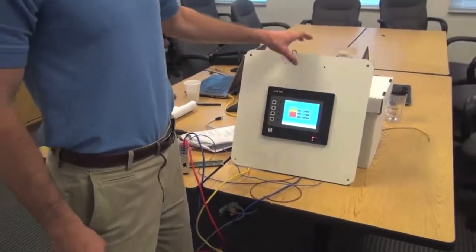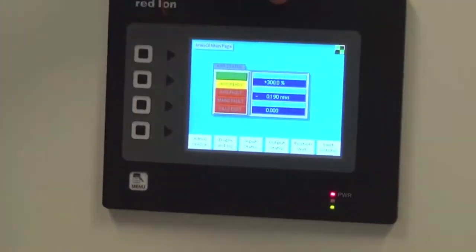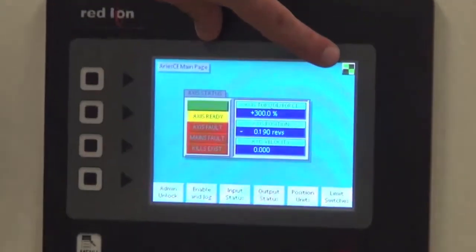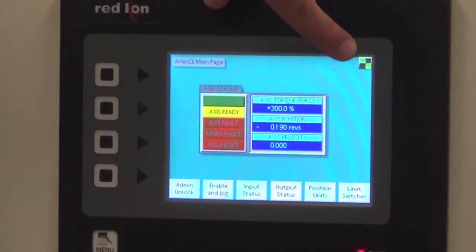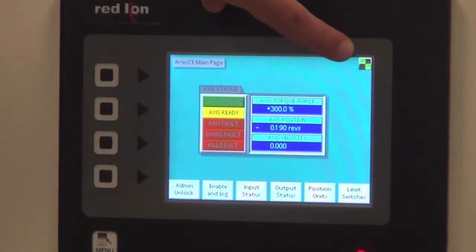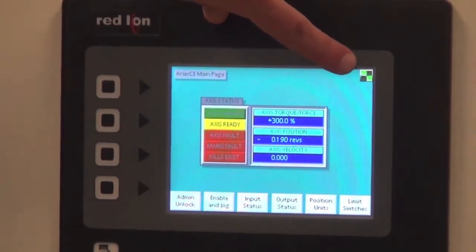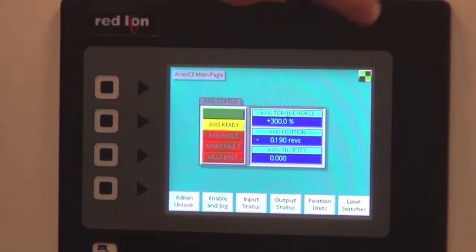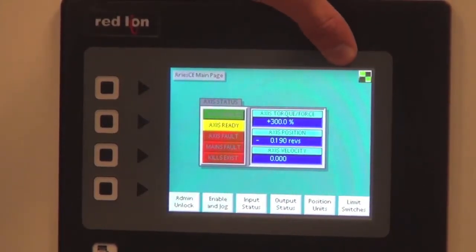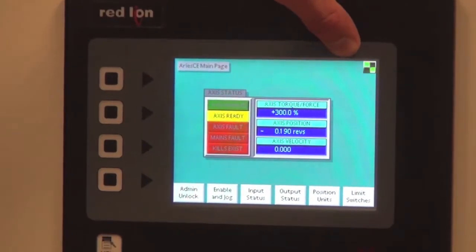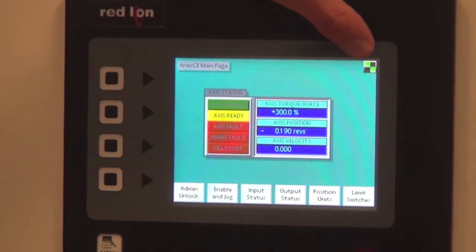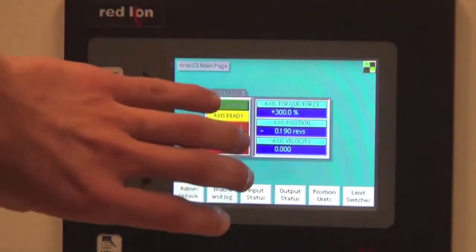On the main page it's important to note on the top right corner the on tick display. Every second it changes and rotates its state. This shows that communications are running back and forth between the red line and the drive. If this ever stops it shows the user I'm not communicating anymore and that's why the screen is frozen.